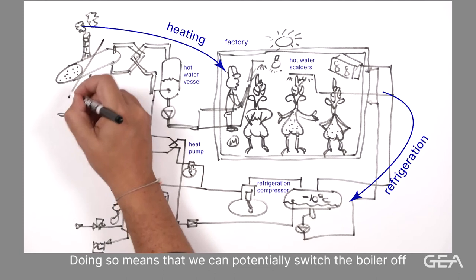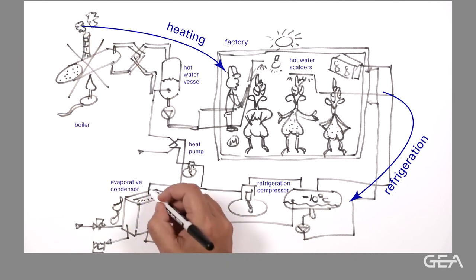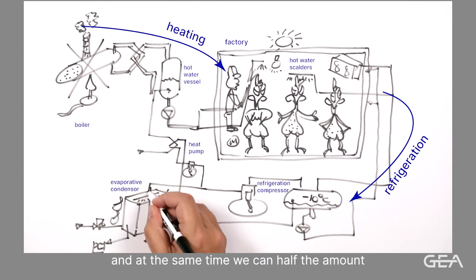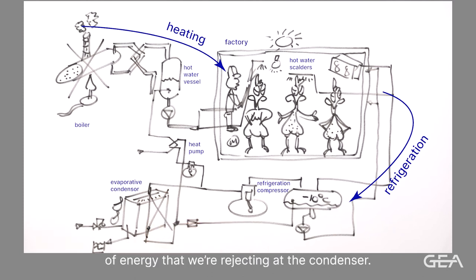Doing so means that we can potentially switch the boiler off. And at the same time we can half the amount of energy that we're rejecting at the condenser. So we save the fan power and we save the water on the condenser.